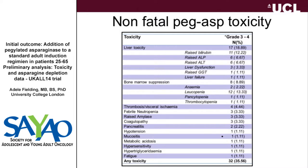We also looked at non-fatal toxicity — the grade 3-4 toxicities. As the two previous speakers discussed, liver toxicity was prominent. Hyperbilirubinemia was a particular issue. Patients who developed hyperbilirubinemia did eventually generally recover, but some had very high bilirubins for weeks and in some cases months, and often it precluded any further anti-ALL therapy — which is really quite a major issue.